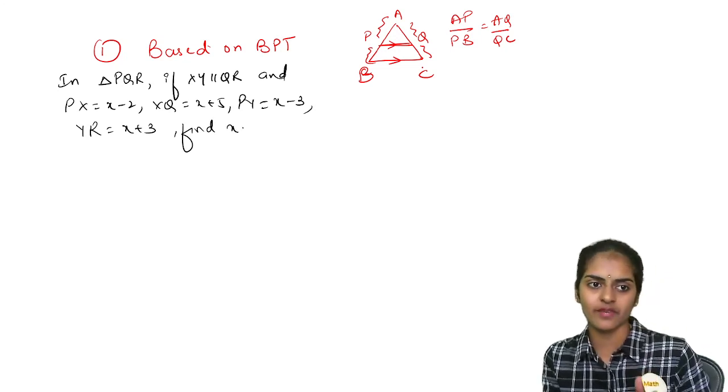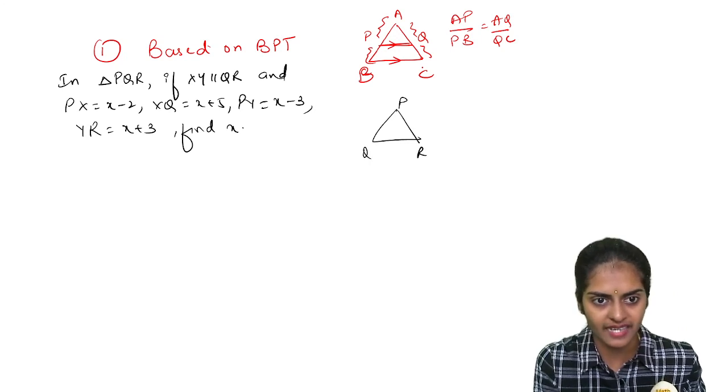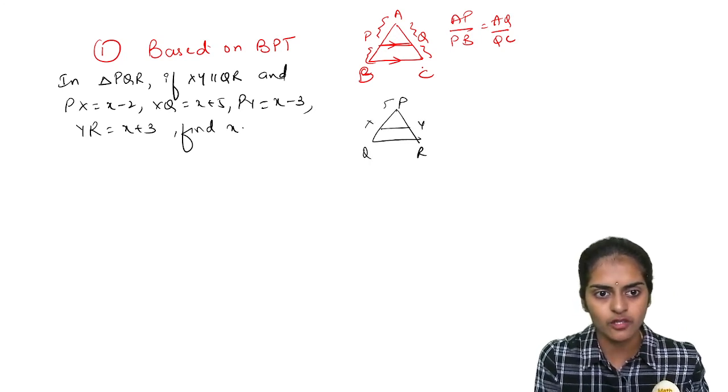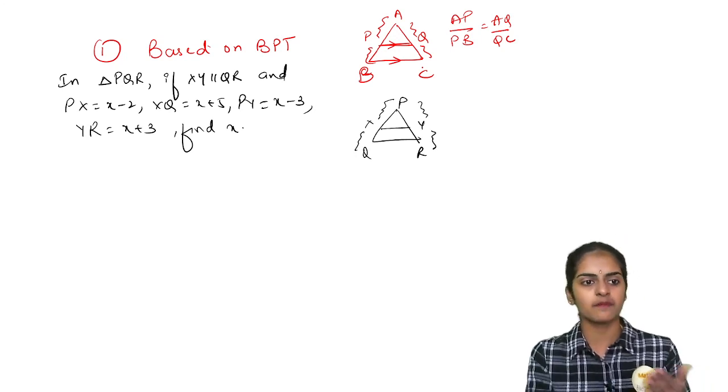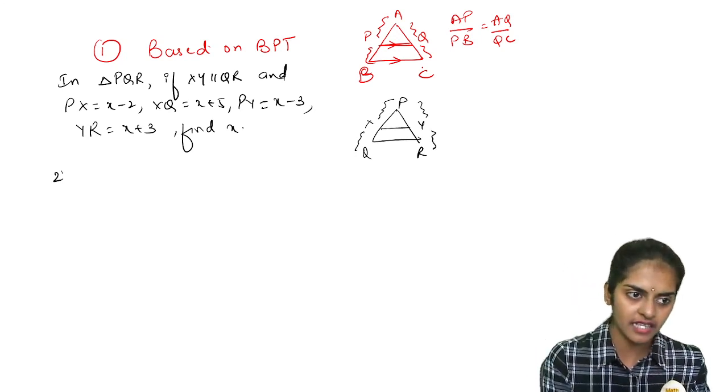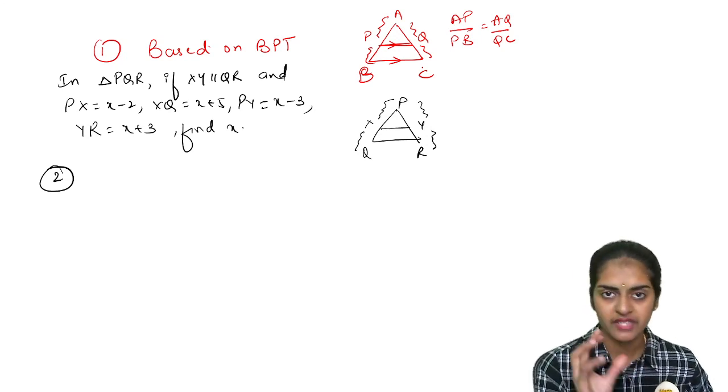So simply, XY is parallel to QR. If you draw the triangle PQR with XY parallel, you will get PX/XQ = PY/YR. Then substitute all the values, cross multiply, you will get a quadratic equation and you will find the value of x.